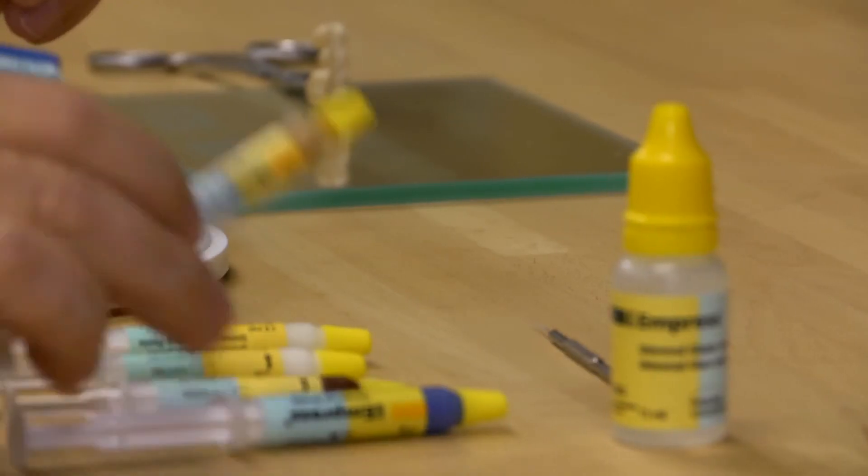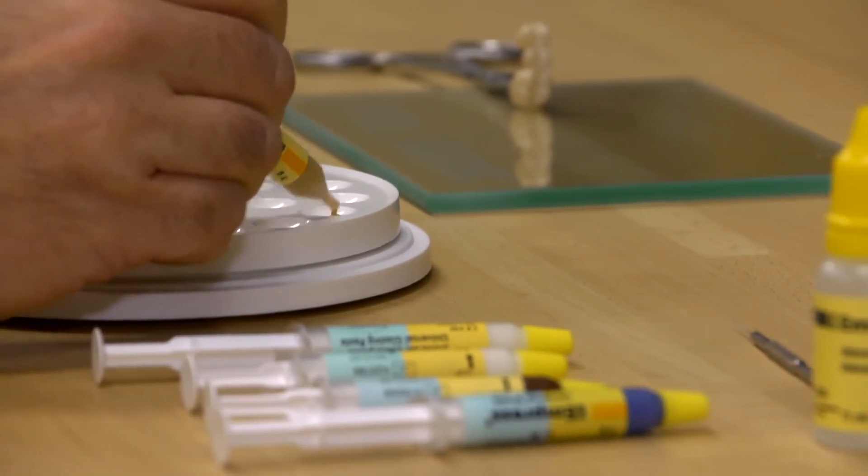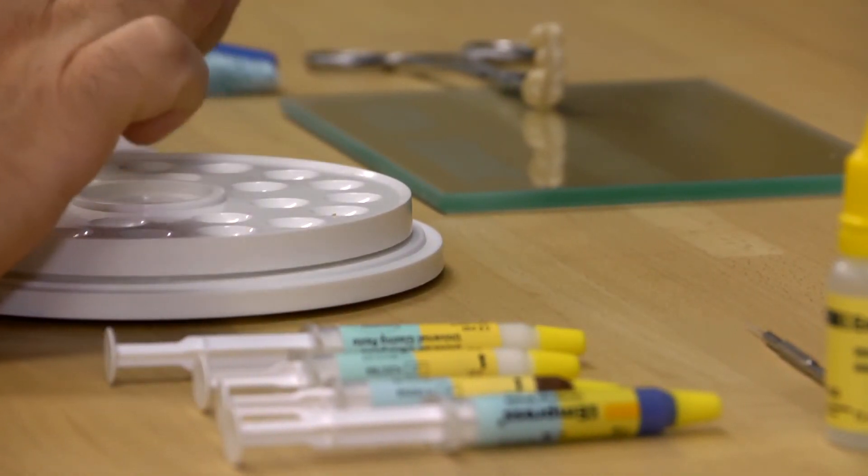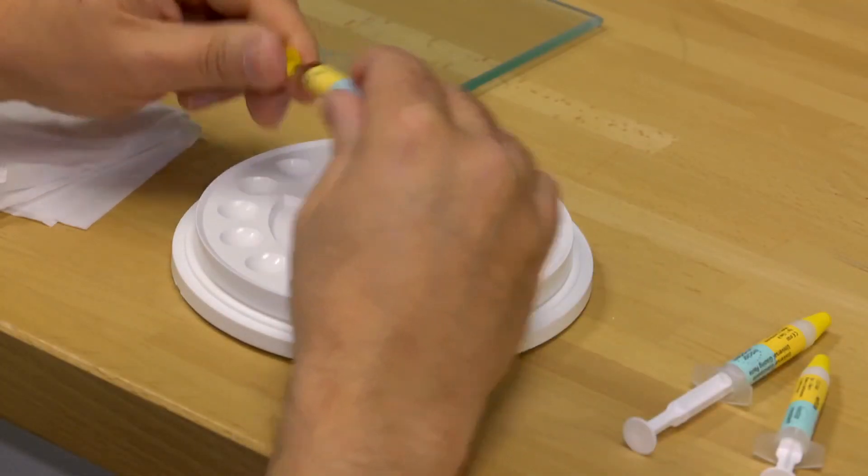Staining technique for restorations made with Inchorus TZI is virtually identical to the PFM method. They can be finalized using all standard paint and gloss colors for zirconia ceramics. Observe each manufacturer's processing instructions at all times.